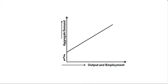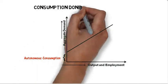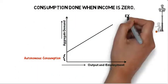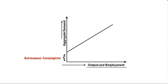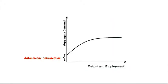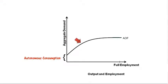Notice that this area shows us the autonomous consumption that a society does. We studied in the aggregate demand video that autonomous consumption is a type of consumption that is done even when your income is zero — here, zero income is shown by zero employment and output. Now, in your textbooks you might see the aggregate demand function shown somewhat like this, showcasing a positive relationship between employment and aggregate demand. However, in reality, the aggregate demand function looks like this — aggregate demand starts to rise at a diminishing rate as we get closer to full employment.